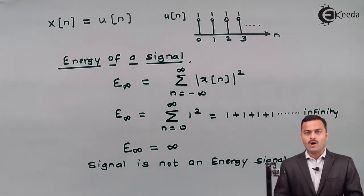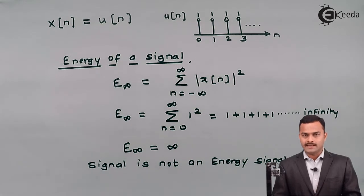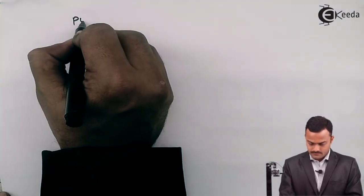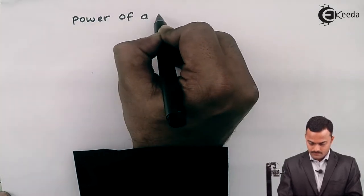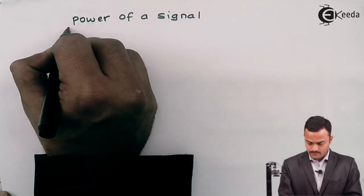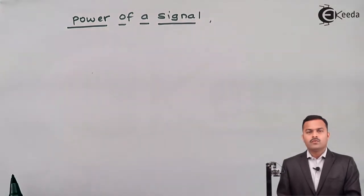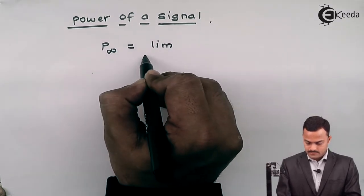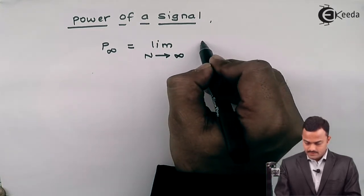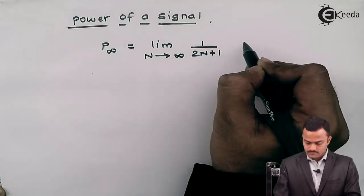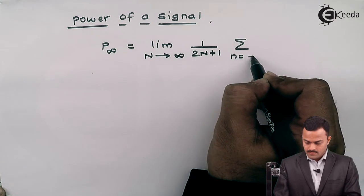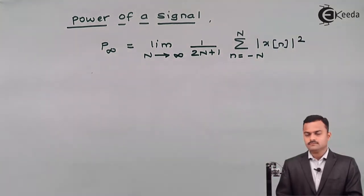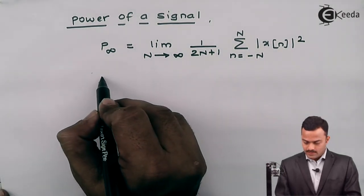We have eliminated the possibility of the signal being an energy signal, so now we need to check for power. For discrete time, the formula for power is: P infinity equals the limit as N tends to infinity of 1 over (2N plus 1), times the summation from n equals minus N to plus N of |x of n| squared.